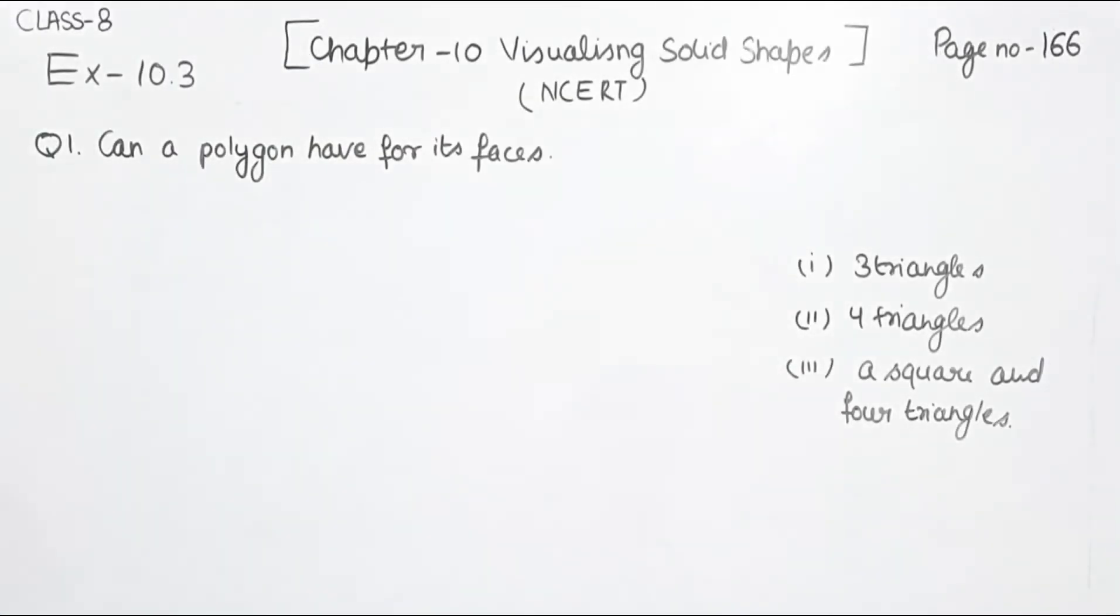Can a polyhedron have for its faces: We have three parts in this question. We are going to start with the first one. In the first one, we have three triangles.